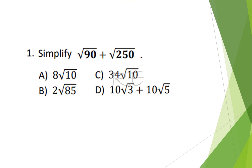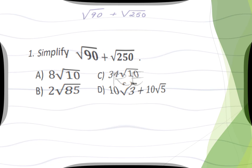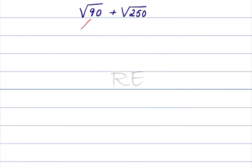Simplify square root of 90 plus square root of 250. Now, 90 is 9 times 10, so square root of 90 is square root of 9 multiplied by square root of 10.